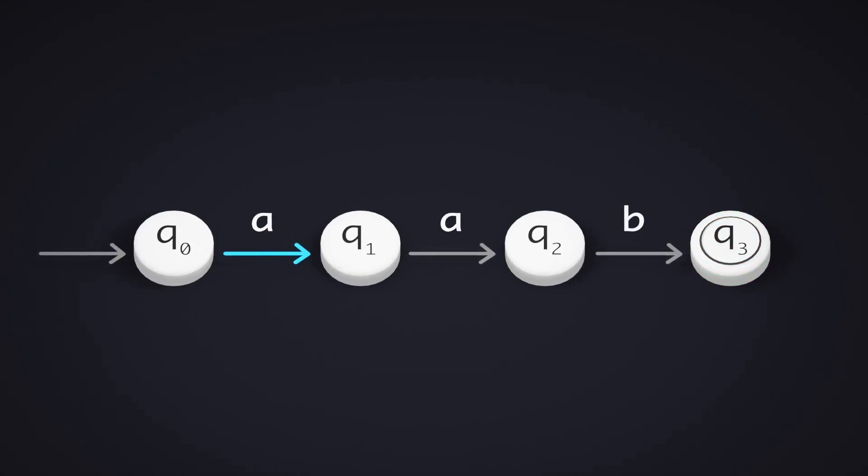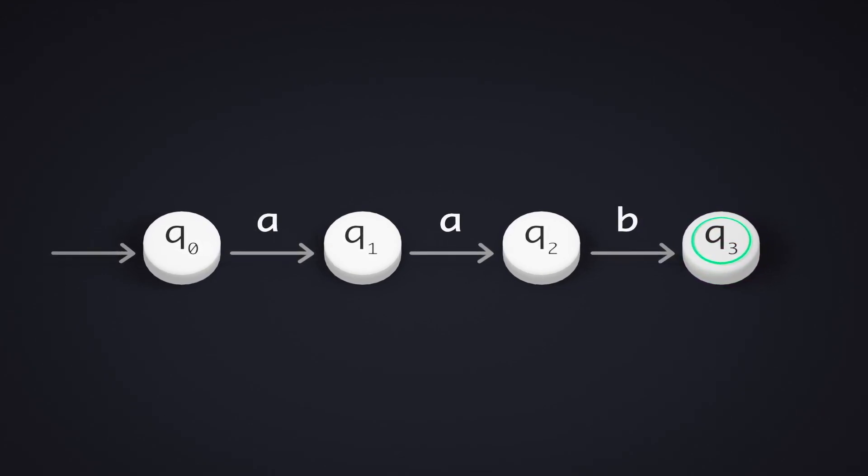So, A followed by another A, then B. The last state is the accepting state, so once again, we indicate it with the inner circle.